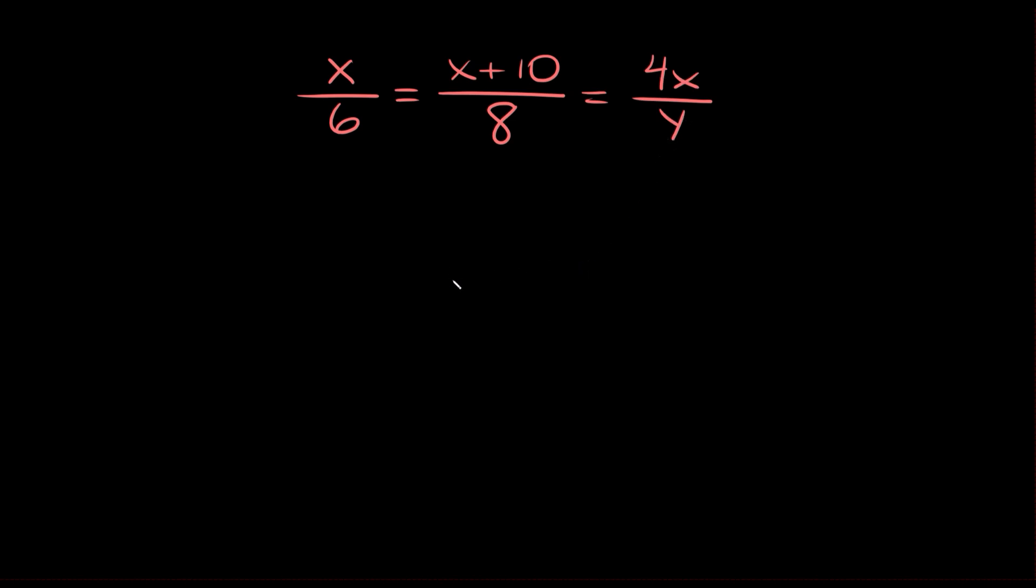The easiest way to solve this is to solve for one variable first. In this case let's ignore y. Let's ignore this fraction for now since it has a y. Let's focus on these two fractions. So x over 6 equals x plus 10 over 8... sorry that should be 18 actually.